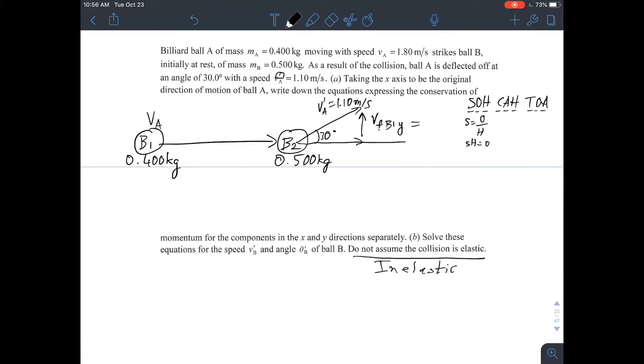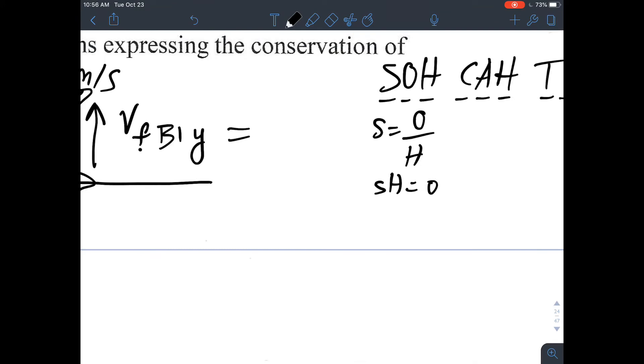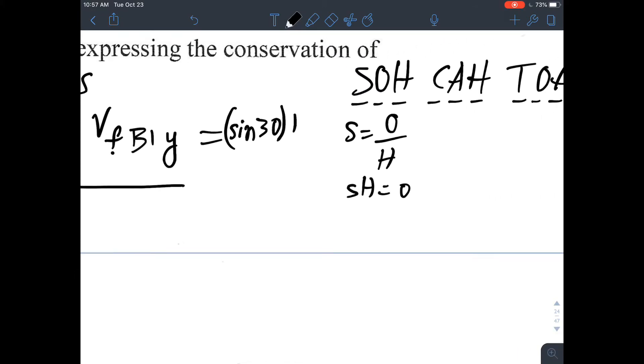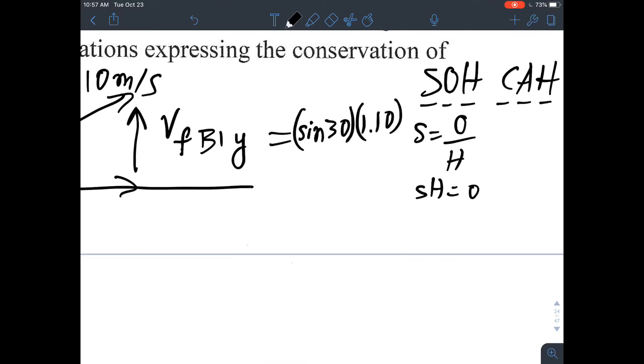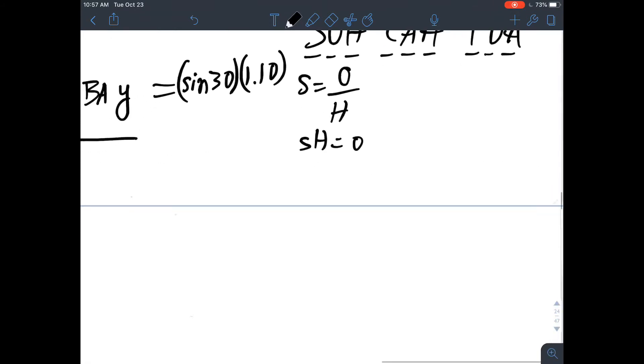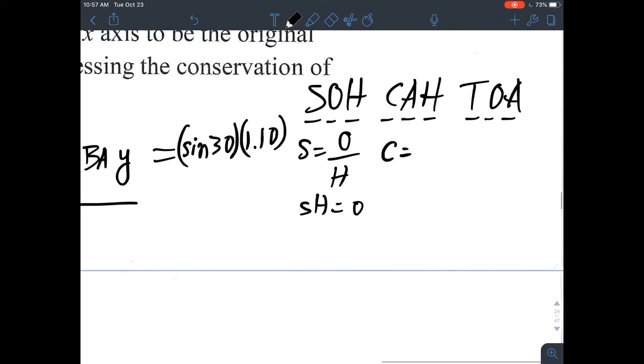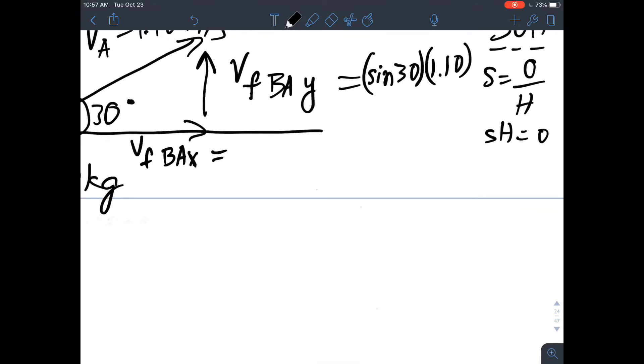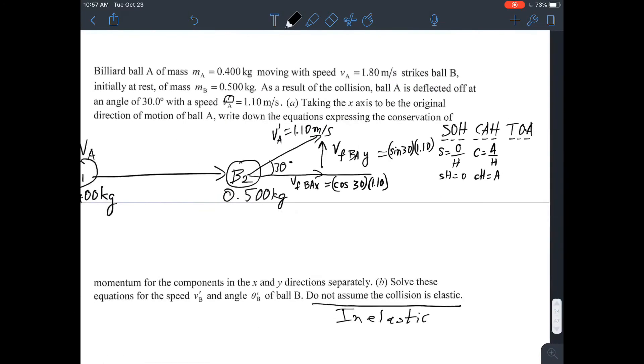If you just write, let's expand this a little, sine of 30, that's the angle, multiplied by the velocity, 1.10, that would be our final velocity of ball 1 or ball A in the y direction. What is the final velocity of ball A in the x direction, you ask? Again, cosine is adjacent over hypotenuse, that means cosine multiplied by hypotenuse gives you the adjacent, so we just take cosine of 30 times 1.10.